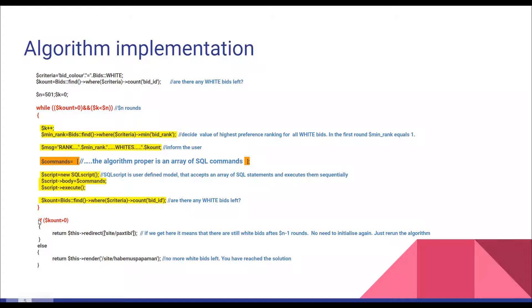Eventually, if you are out of the loop, you just check if you still have white bits. If this is the case, it means that you have to rerun the algorithm — there is no need to initialize again. Each time around the loop you are a bit closer to the solution. Otherwise, if there are no white bits, it means that you have reached the solution and you just stop.